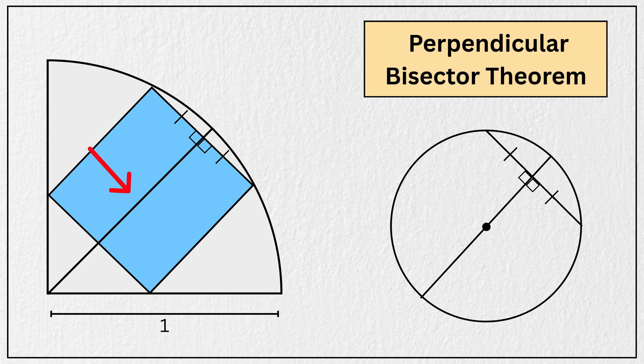And since this is square, that means this same line must also be the perpendicular bisector of the opposite side of the square, right? So we have a 90 degree angle here, and another 90 degree angle here.